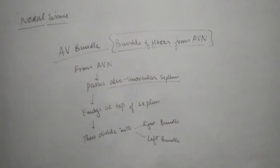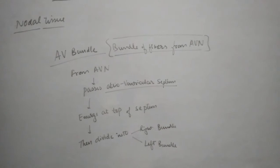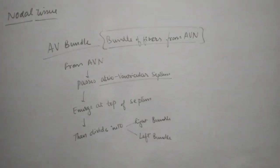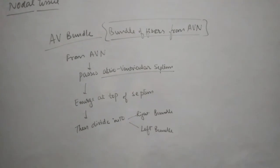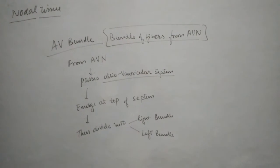The AV bundle is a bundle of nodal fibers from the atrioventricular node. They start from this AV bundle and then pass through the atrioventricular septum, then emerge at the top of the septum.